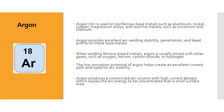Argon is kind of the backbone of the welding world as far as gases go. It's an element used on non-ferrous base metals such as aluminum, nickel, copper, magnesium alloys, and reactive metals such as zirconium and titanium. Argon provides excellent arc welding stability, penetration, and bead profile on these base metals. When welding ferrous base metals, argon is usually mixed with other gases such as oxygen, helium, carbon dioxide, or hydrogen. The low ionization potential of argon helps create an excellent current path and superior arc stability. Argon produces a constricted arc column with high current density, which causes the arc energy to be concentrated over a small surface area.